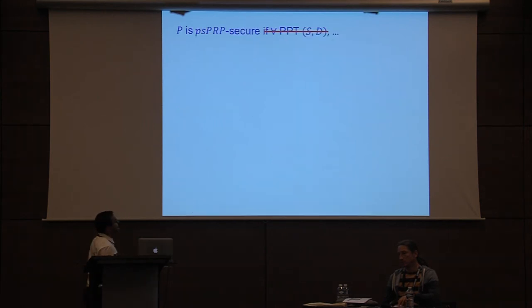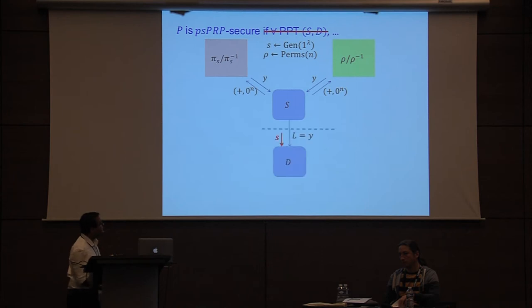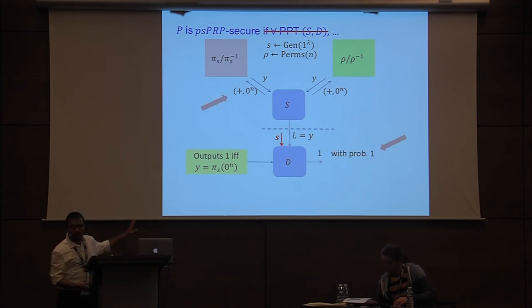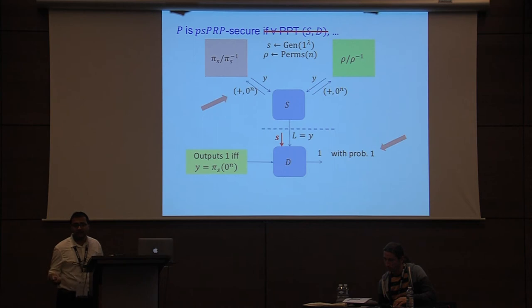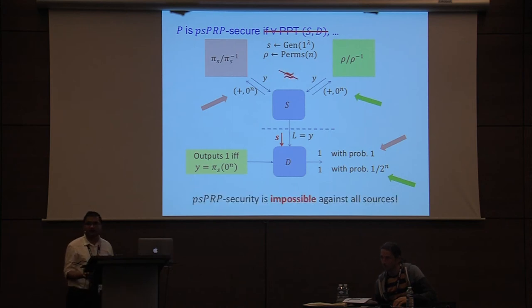Unfortunately, we cannot have security against all sources and distinguishers, because there exists a source that makes a forward query on 0^n to its oracle, gets the response Y, sets it as its leakage, and then the distinguisher, getting this leakage and seed, outputs one if and only if Y is the image of 0^n under pi_S. In the left case it always outputs one; in the right case Y is a uniformly random string independent of the seed, so it outputs one with probability at most 1/2^n. Therefore S and D can distinguish these two worlds, and we cannot have PSPRP security against all sources.